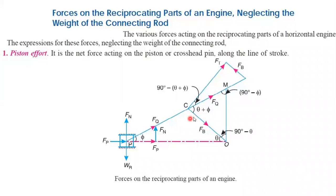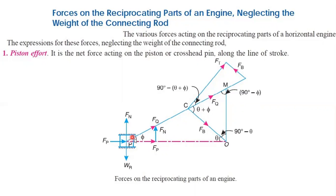Pc will be denoting the connecting rod which will be having a force Fq, and Co is the crank. This Fq is resolved into two components — one perpendicular to the crank and another along the crank. The perpendicular force is Ft and the force along the crank is Fb. We will also have Fn which acts along the sides of the cylinder walls or guide bars.